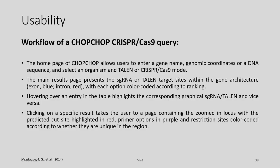This tool can be helpful in both CRISPR and TALEN cases. CHOPCHOP allows the user to enter a gene name, genomic coordinates, or a DNA sequence, and select an organism and TALEN or CRISPR-Cas mode. The main results page presents the single guide RNA or TALEN target sites within the gene architecture, color coded according to ranking.